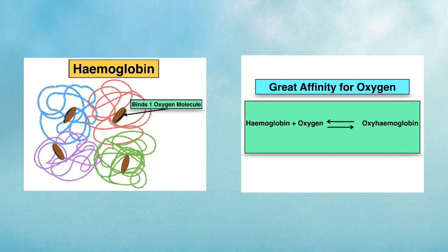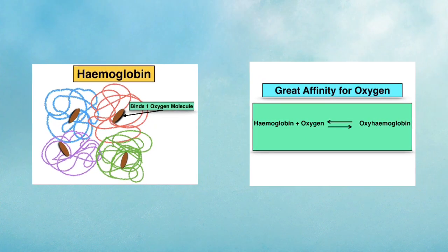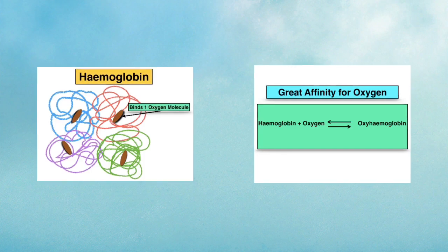When oxygen and haemoglobin come into contact, oxyhaemoglobin is formed, and this is a reversible reaction.